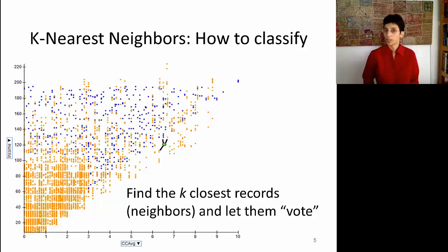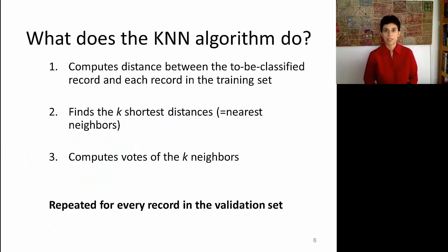That's a very graphical description of what k-nearest neighbors does. Let's just formalize and see what happens behind the scenes. So step number one, the k-n algorithm, is going to compute the distance between every new record that you want to classify to each and every record in the training set. Then, among all these records in the training set, it's going to identify the k-shortest distances. These are called the nearest neighbors. And once we have these nearest neighbors, we're going to let them vote in terms of the y variable, in terms of the class that they are members of. This is going to be done for each and every record that we want to classify. When we're just evaluating performance on a holdout set, it means that we're going to have to go through steps one, two, and three for every record in this holdout set.